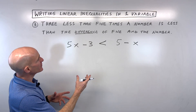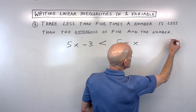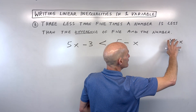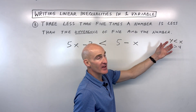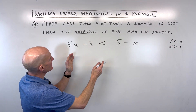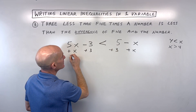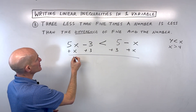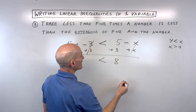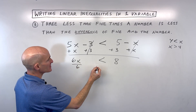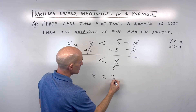So our inequality is 5x − 3 < 5 − x. Let's solve it — variables on one side, numbers on the other. Add x to both sides, then add 3 to both sides. 5x + x = 6x, and 5 + 3 = 8, giving 6x < 8. Divide both sides by 6: x < 8/6, which simplifies to x < 4/3, or one and one-third.